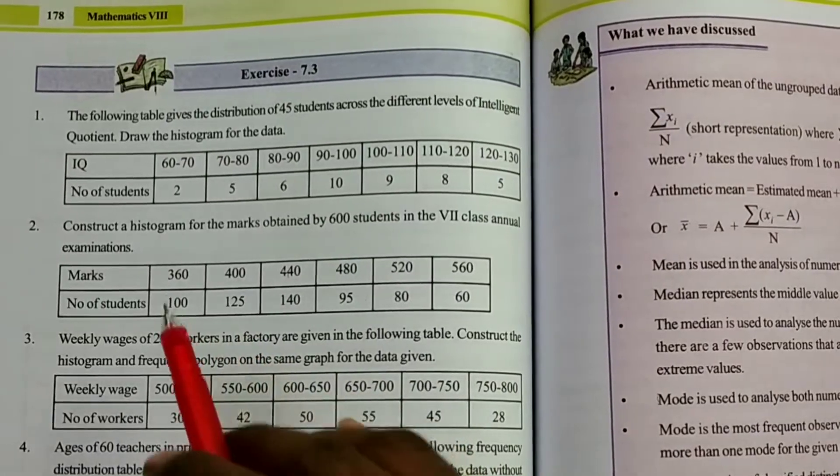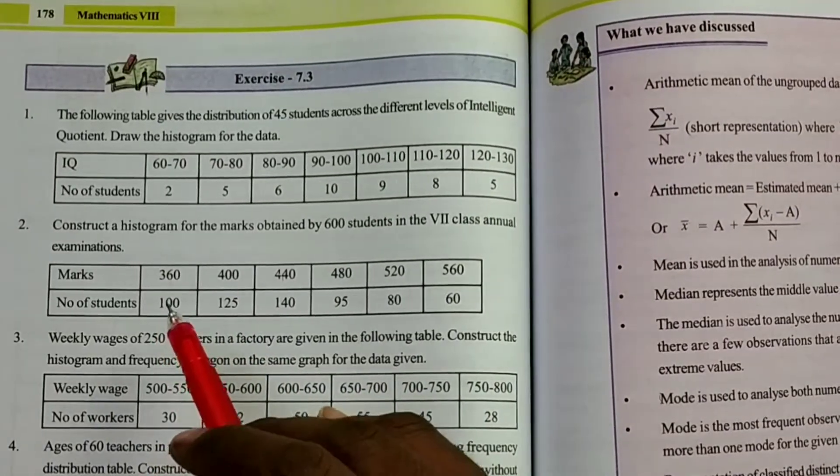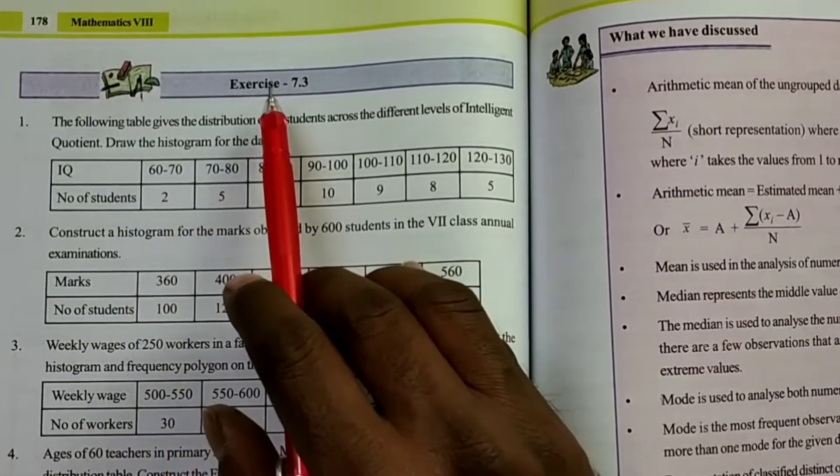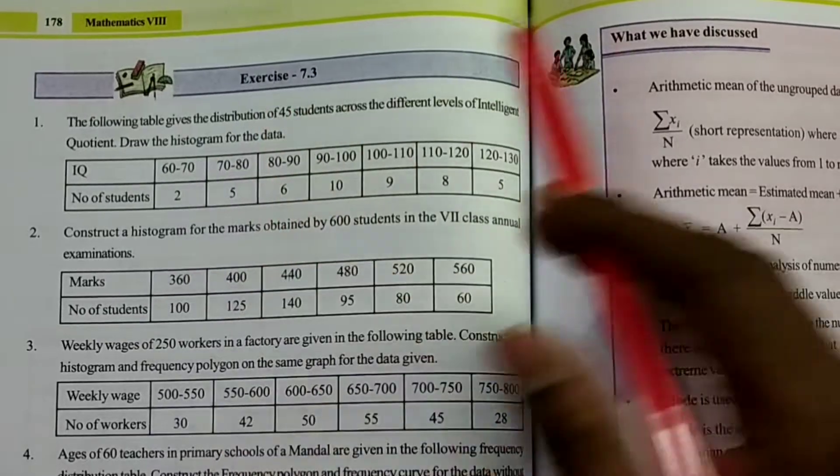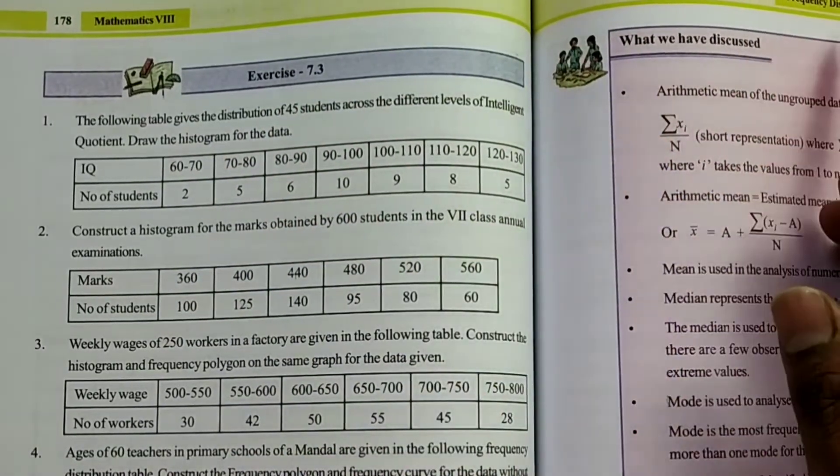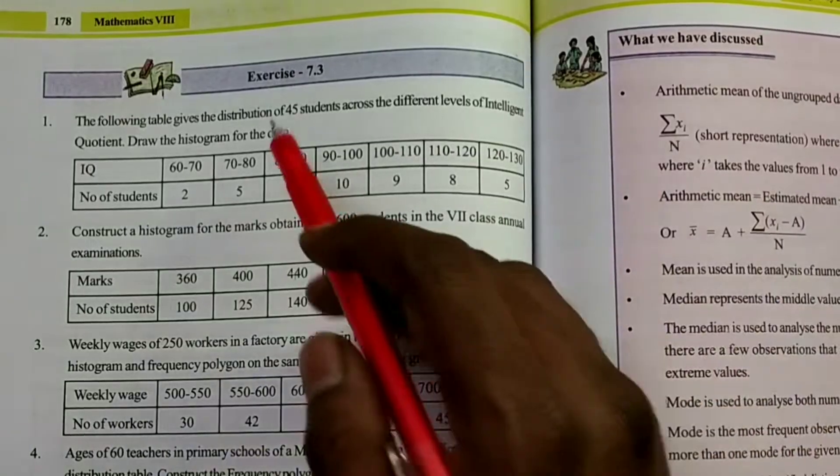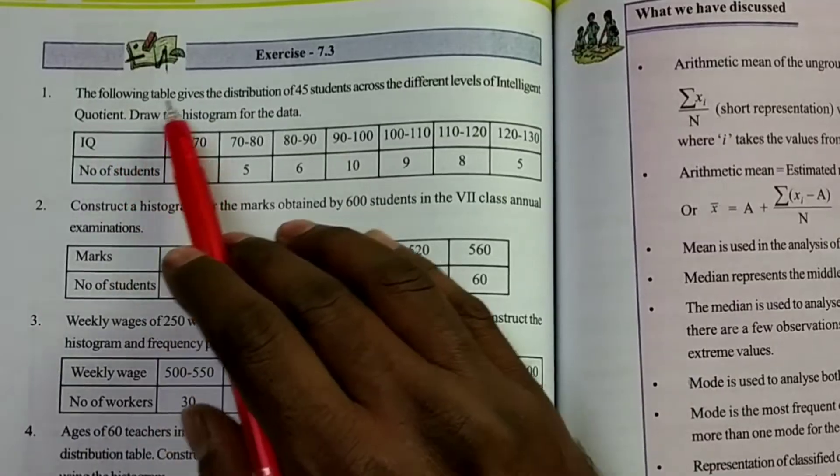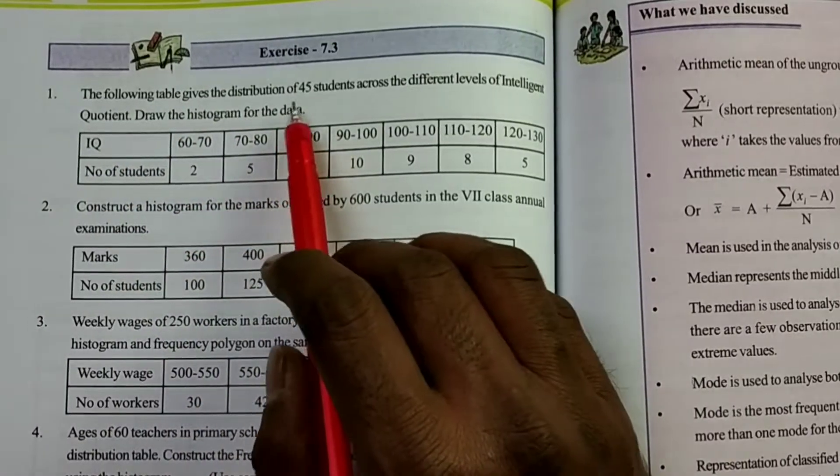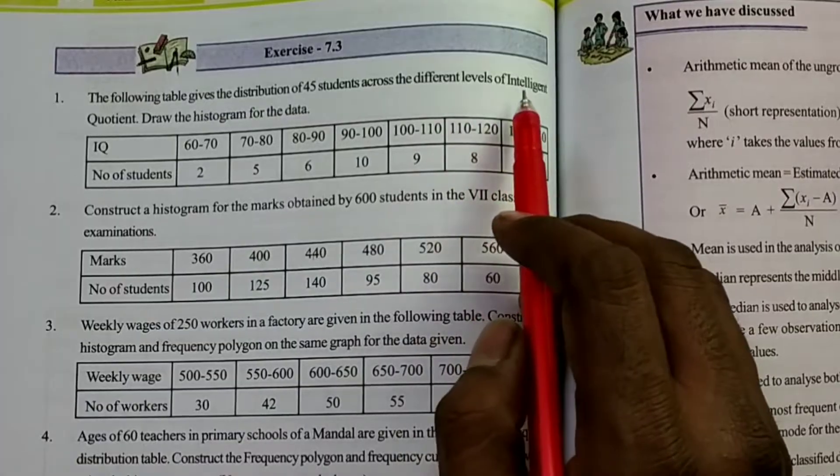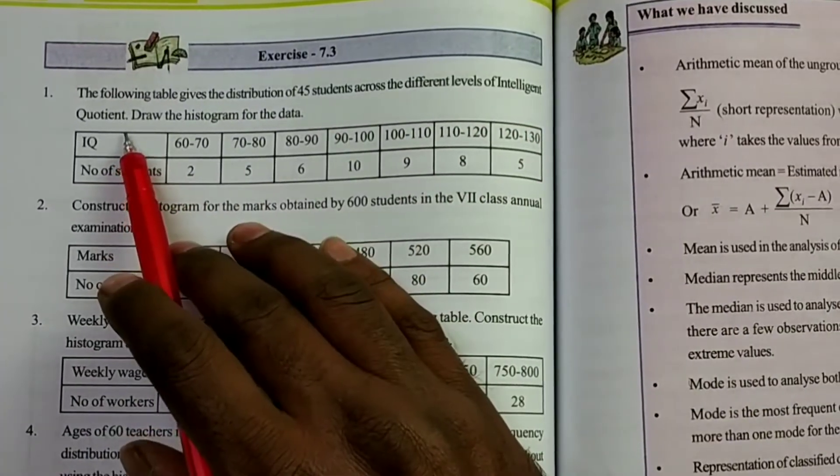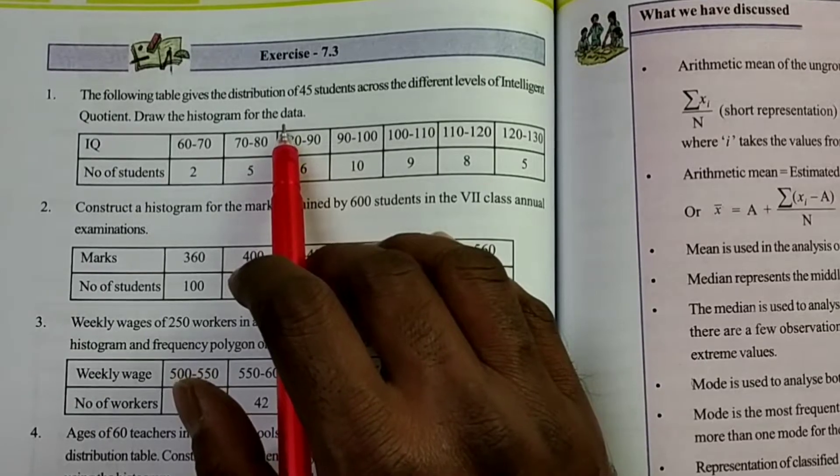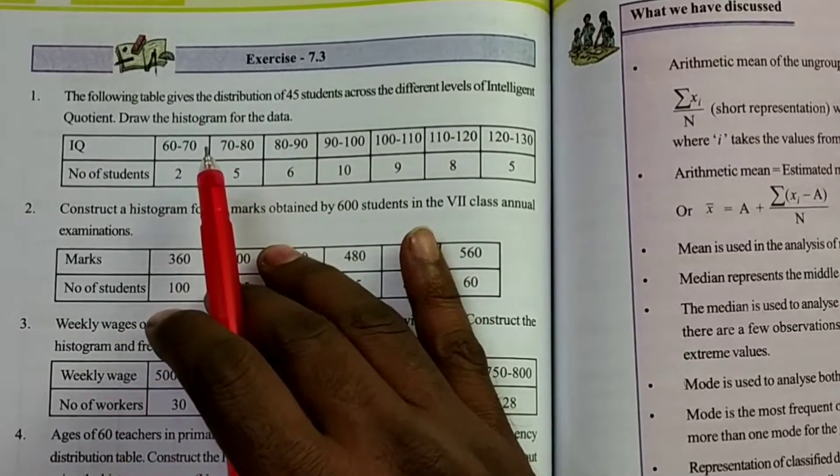Hello students, from this video I would like to explain the graphs of class 8 from APN Telangana State Boards. The chapter is Frequency Distribution Tables and Graphs, Exercise 7.3, the first problem. The question is: the following table gives the distribution of 45 students across the different levels of intelligent quotients. Draw the histogram for the data. This is the question. We have to construct the histogram.